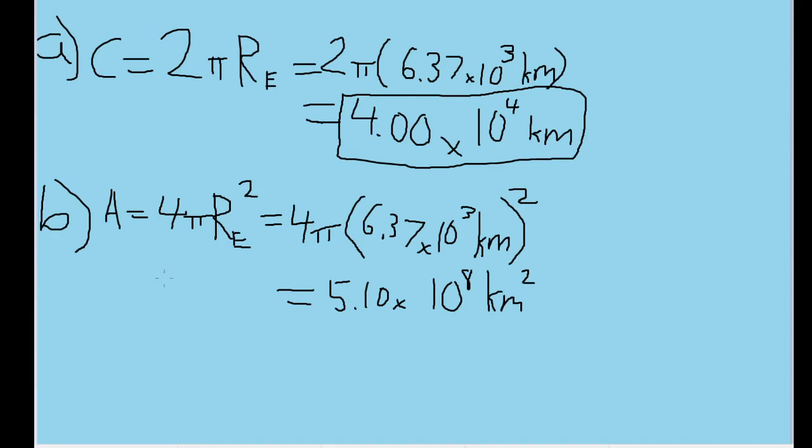Now the common formula for the surface area of a sphere is 4 pi times the radius squared. So once again, we'll plug in the radius of the Earth we have into the radius. And that gives us a surface area of 5.10 times 10 to the eighth power kilometers squared. And that is our surface area of the Earth.